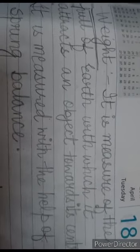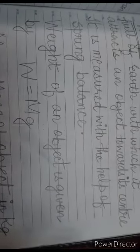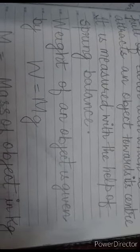Now come to our next topic, that is weight. What do you mean by weight? It is defined as the measure of the pull of earth with which it attracts an object towards its center. It is measured with the help of a spring balance, and weight of an object is given by this relation: W equals to M G.